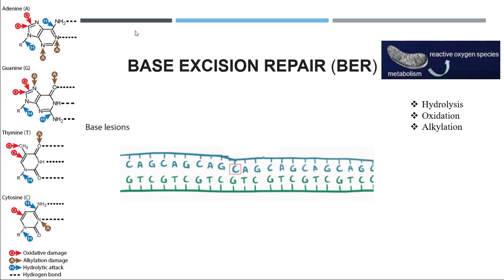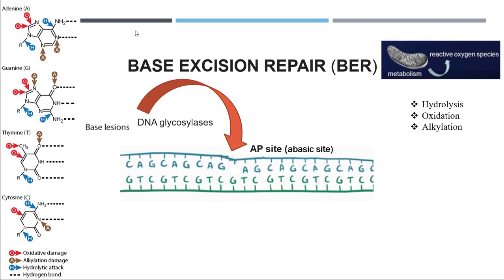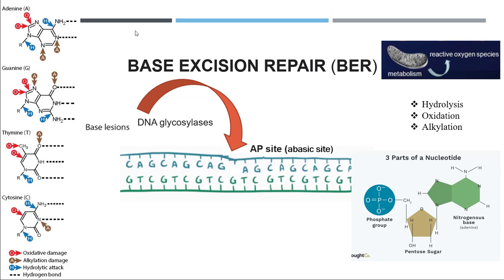The base excision repair system comes in handy. The damaged nucleotide base will be removed by a process called DNA glycosylation, creating a site called an AP site or abasic site. What is happening here is that DNA glycosylase attacks the bond present between the ribose sugar and the nitrogenous base, removing that nitrogenous base from the strand.